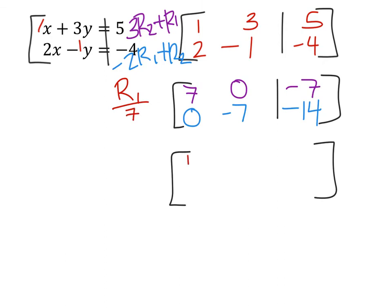So in row 1, 7 divided by 7 is 1, 0 divided by 7 is still 0, and negative 7 divided by 7 would give us a negative 1. Now remember in our original equations we had this x column, y column, and then the answers right here. So this is our x, this is our y, and that equals this 1. Now notice since y is 0, we could just say right here that x is negative 1.